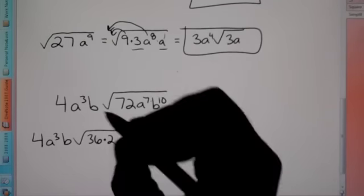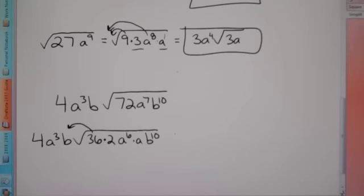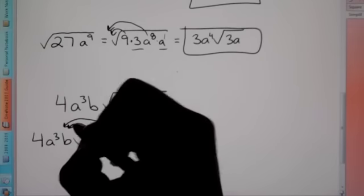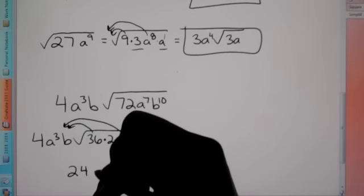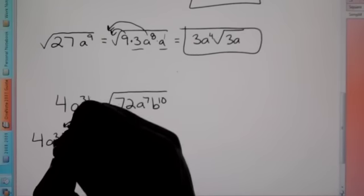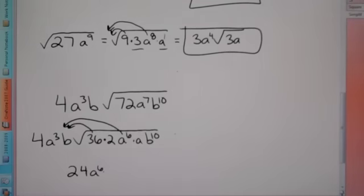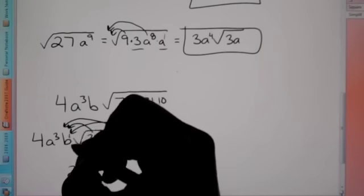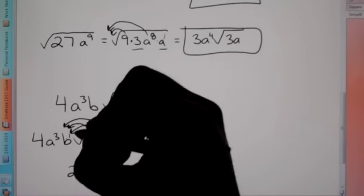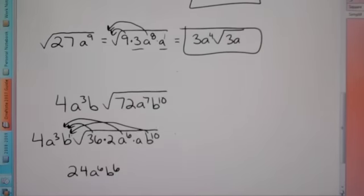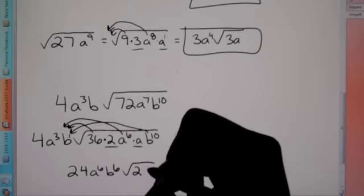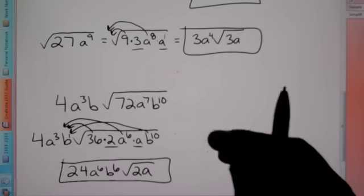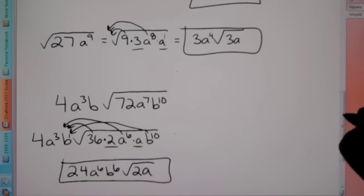Taking out a^6 from under the root gives a^3, and there are already 3 exponents of a outside, so we add: a^3 × a^3 = a^6 on the outside. For b^10, cutting the exponent in half gives b^5, and adding the existing b^1 gives b^6 outside. We're left with √(2a) underneath. Our final answer is 24a^6 b^6 √(2a). The goal is always to pull out as much as possible.